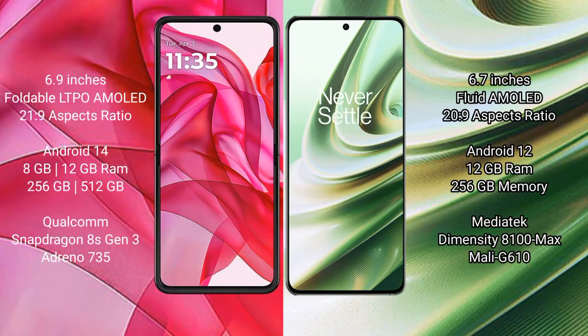Motorola Razr 50 Ultra comes with a 6.9-inch foldable LTPO AMOLED display in 20:9 aspect ratio. OnePlus 10R has a 6.7-inch AMOLED display also in 20:9 aspect ratio.